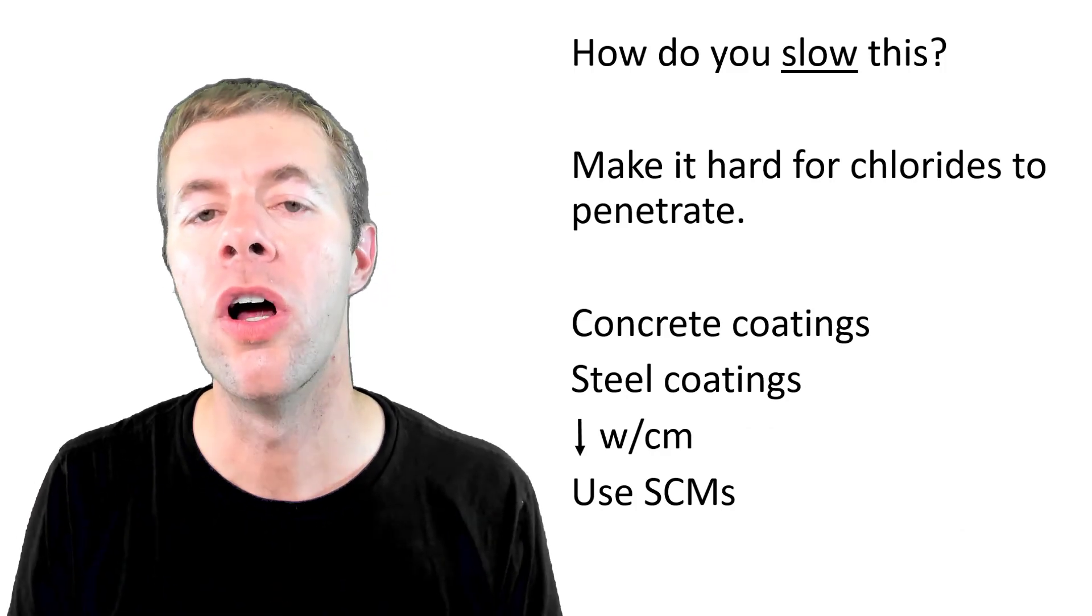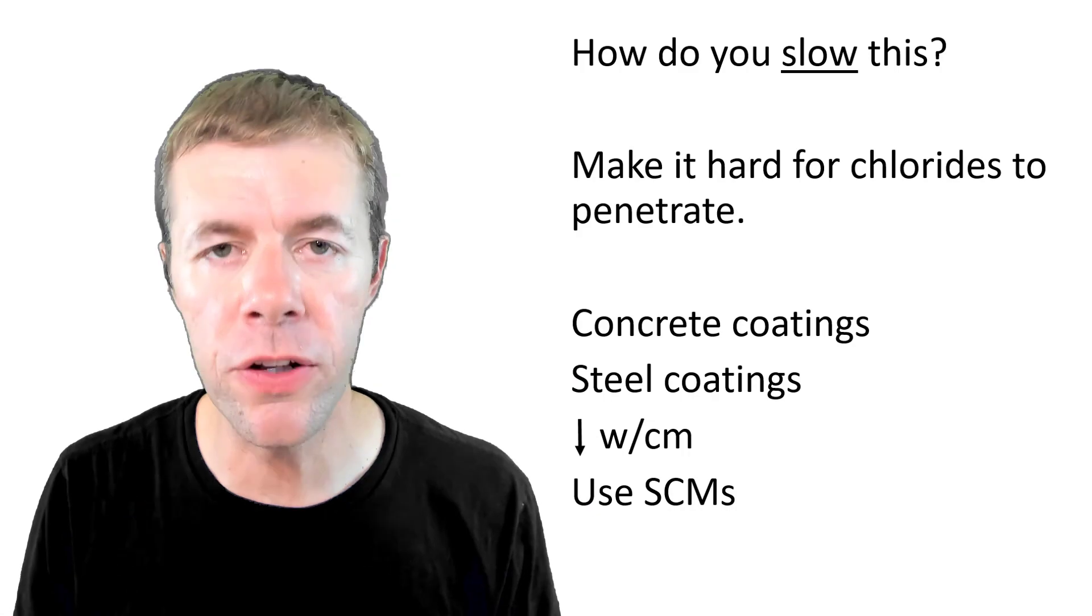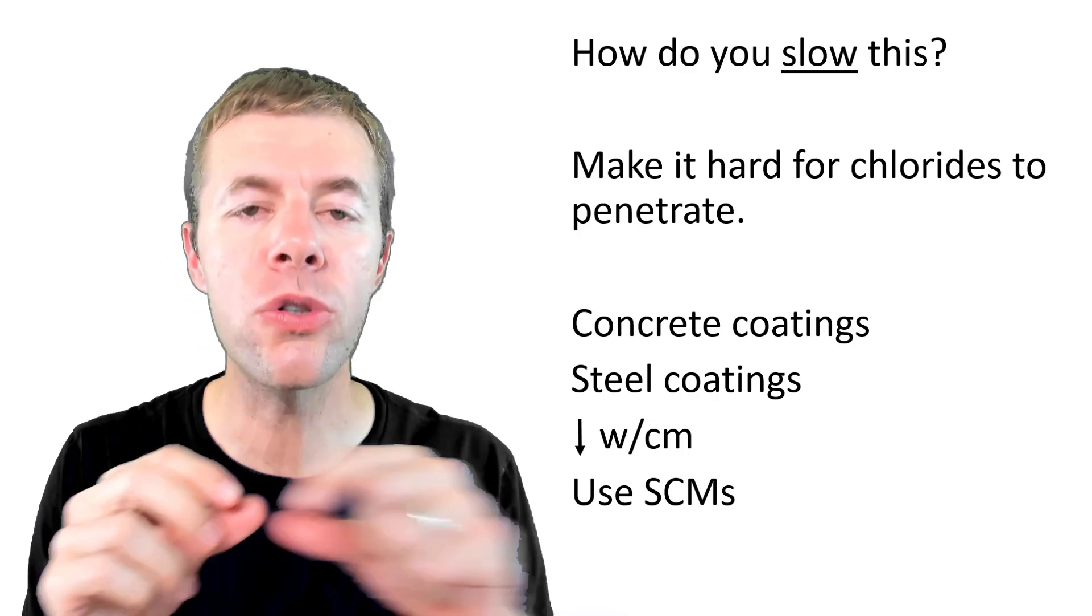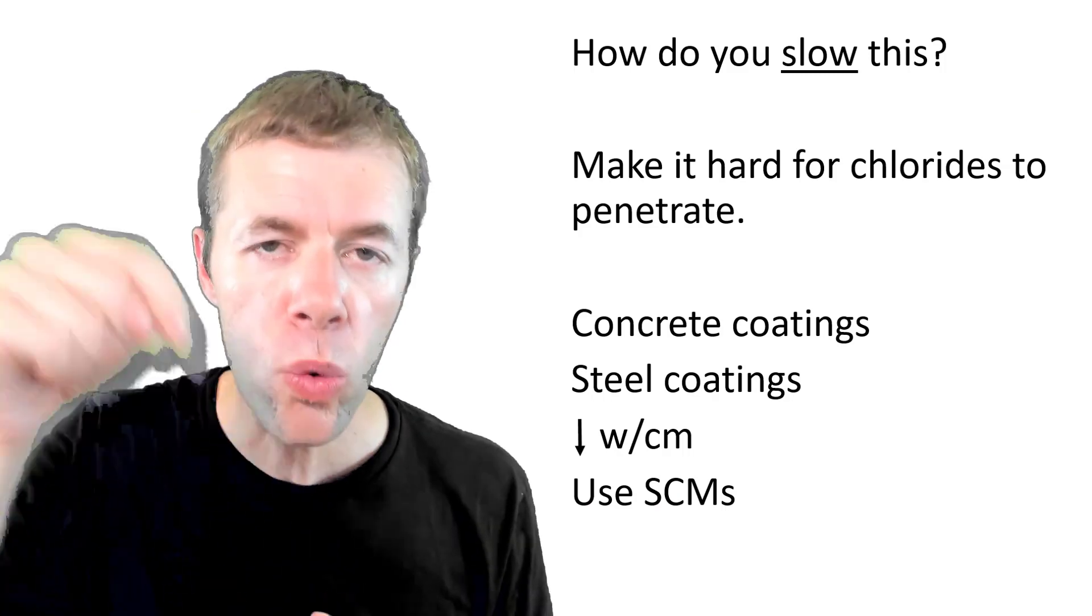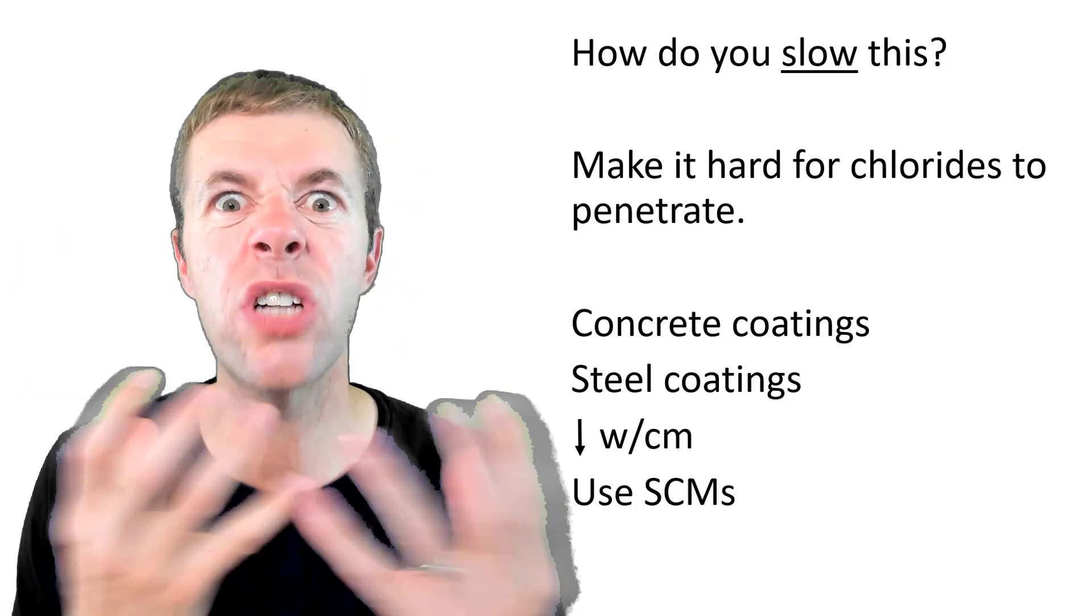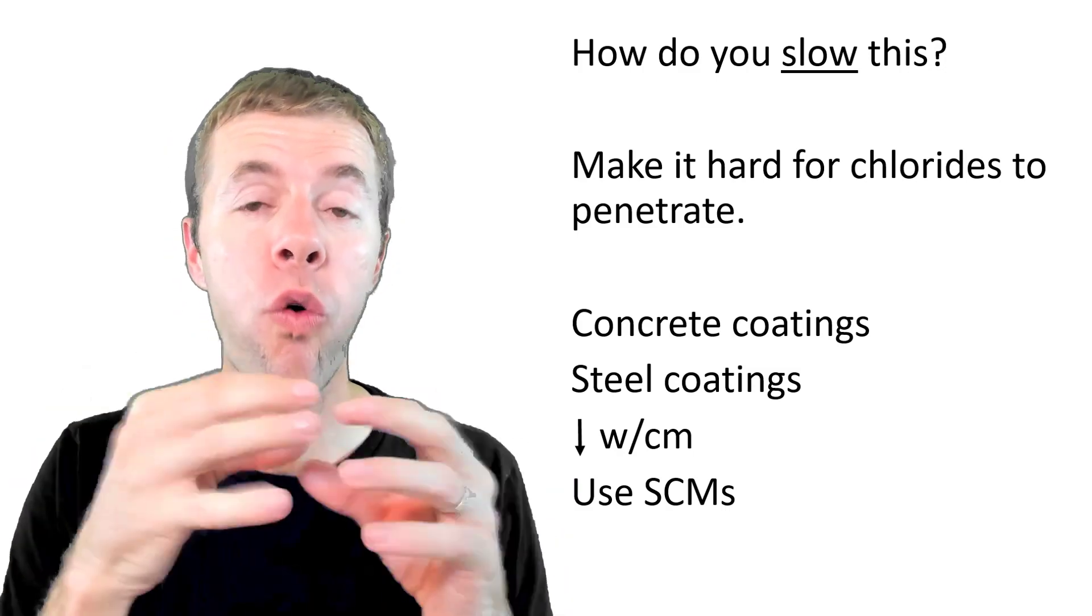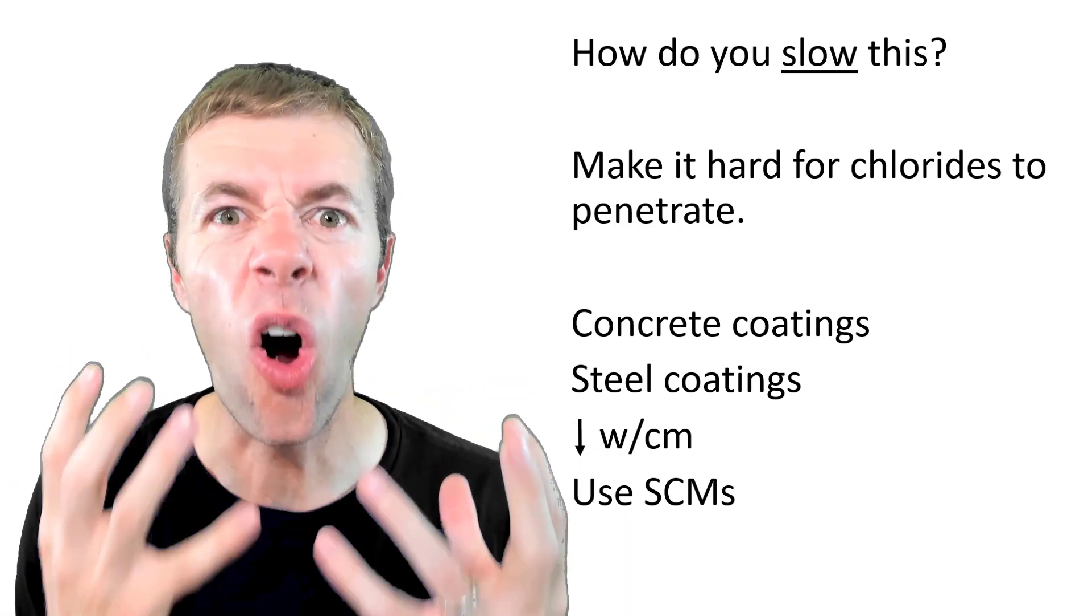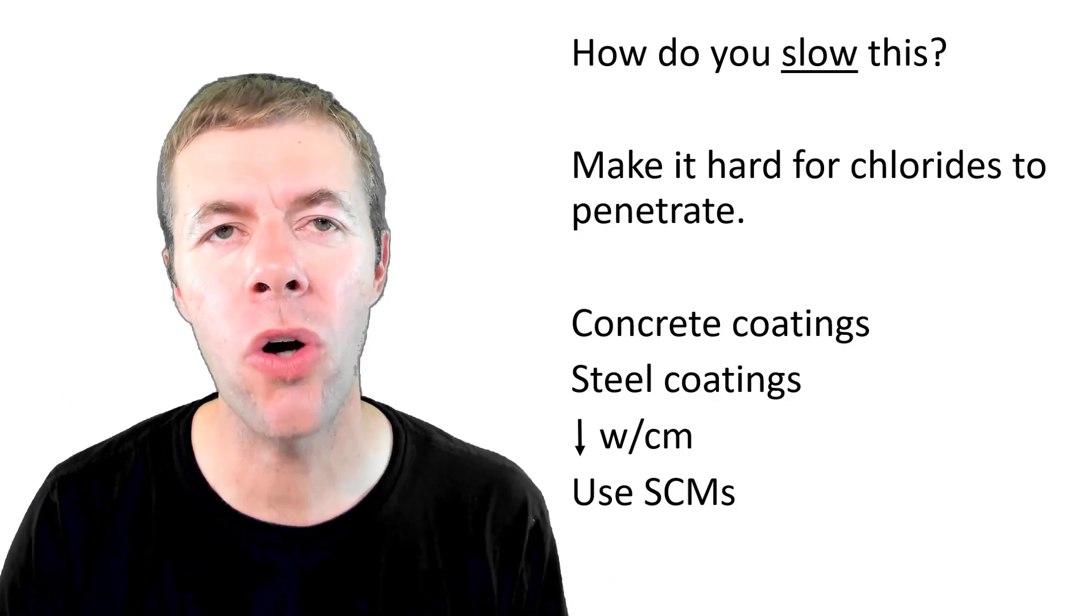Now you can make it harder for the chlorides to penetrate. You can actually use coatings on the surface of the concrete. You can use coatings on the surface of the steel. You can actually reduce your water to cement ratio which is going to make your microstructure tighter. And you can use SCMs which again will form more hydration products and make it harder for those outside chemicals to come into the concrete.